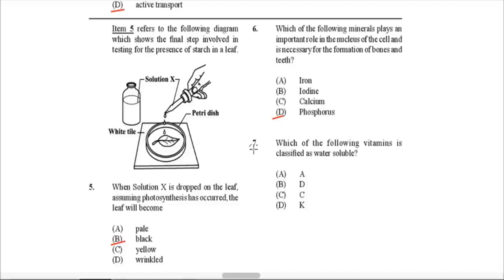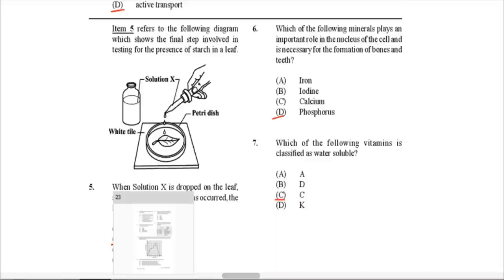Question 7: Which of the following vitamins is classified as water-soluble? That would be C — vitamin C. There are two water-soluble vitamins: B and C. These vitamins dissolve in water and must be replenished daily because they are lost when we urinate or sweat. They are not stored in the body like the fat-soluble vitamins A, D, and K. So you have to constantly replenish them because they are easily lost.